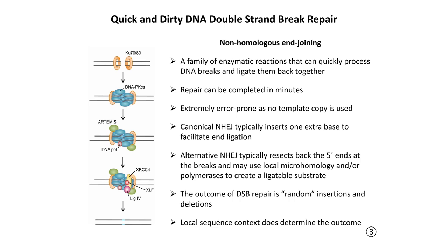Actually, when people look at lots of targets and repeat genome editing in lots of cells, they find that the edits from non-homologous end joining are not truly random — they're based on the local sequence context. At some sites you always get plus-one insertions; at other sites you always get deletions of a particular length because of the local micro-homology.